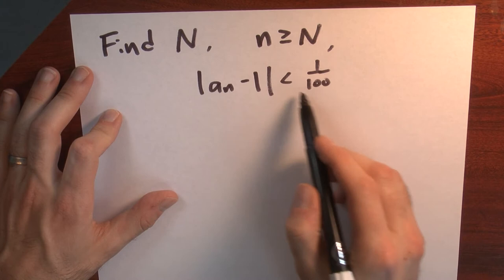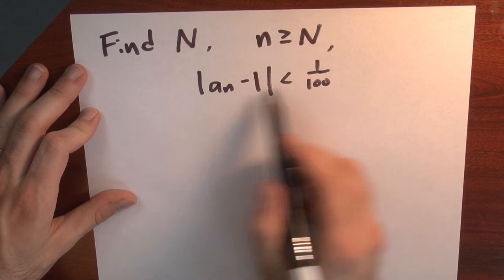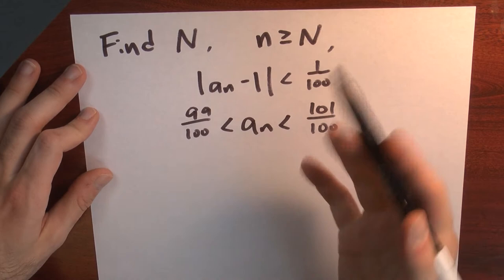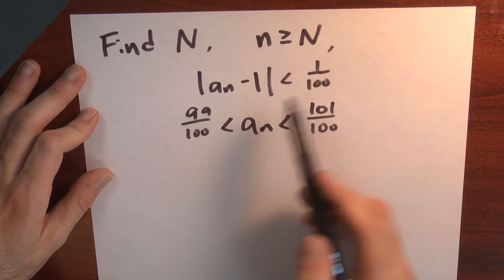But I can rewrite this. Instead of writing it this way, I could instead write that a sub n should be between 99 hundredths and 101 hundredths. To be between 99 and 101 hundredths is exactly the same thing as being within a hundredth of 1.